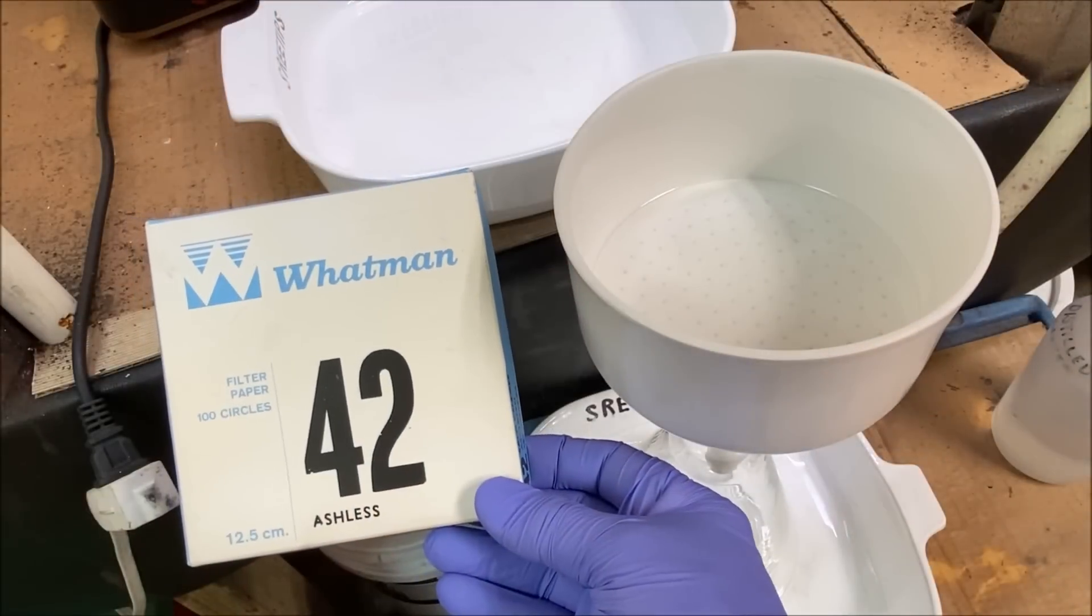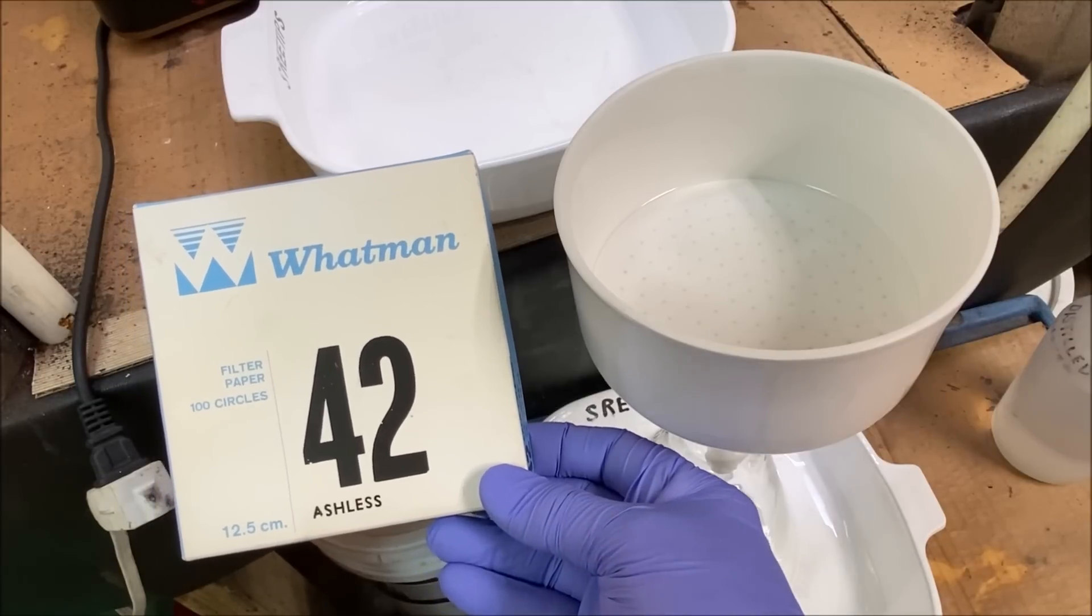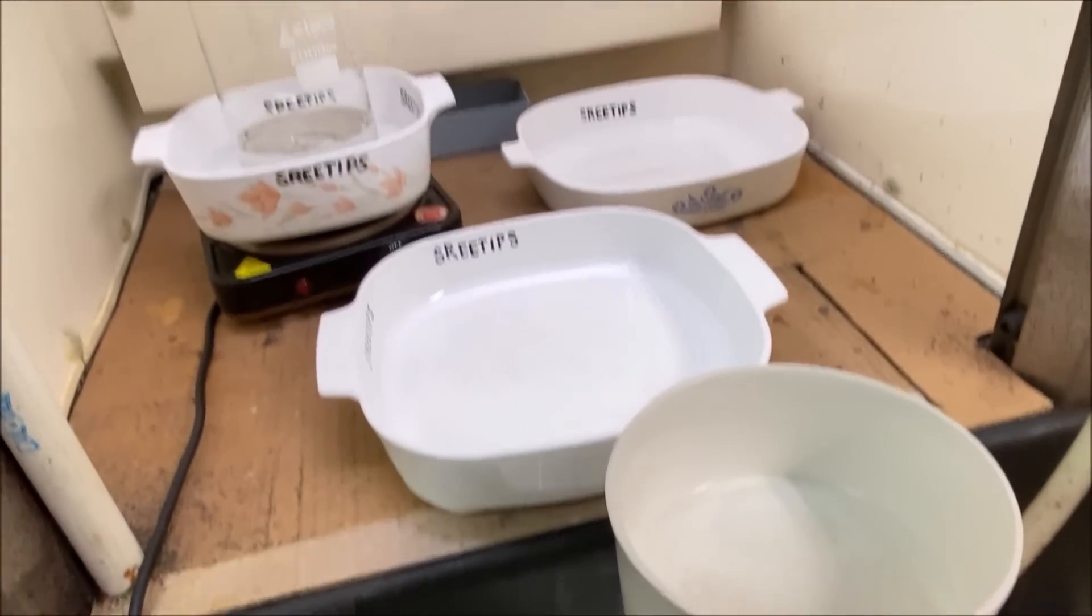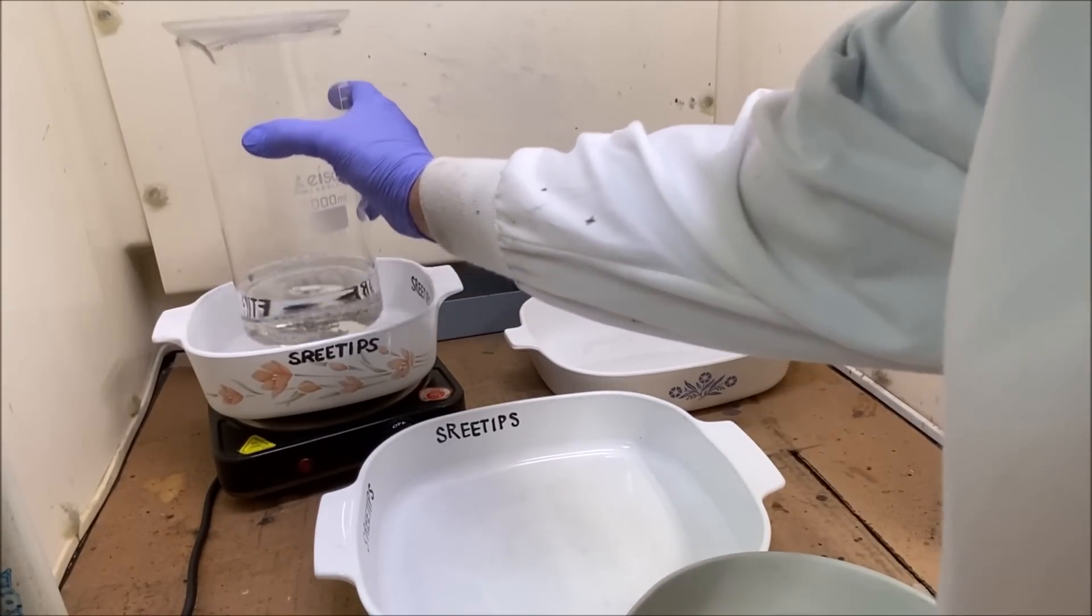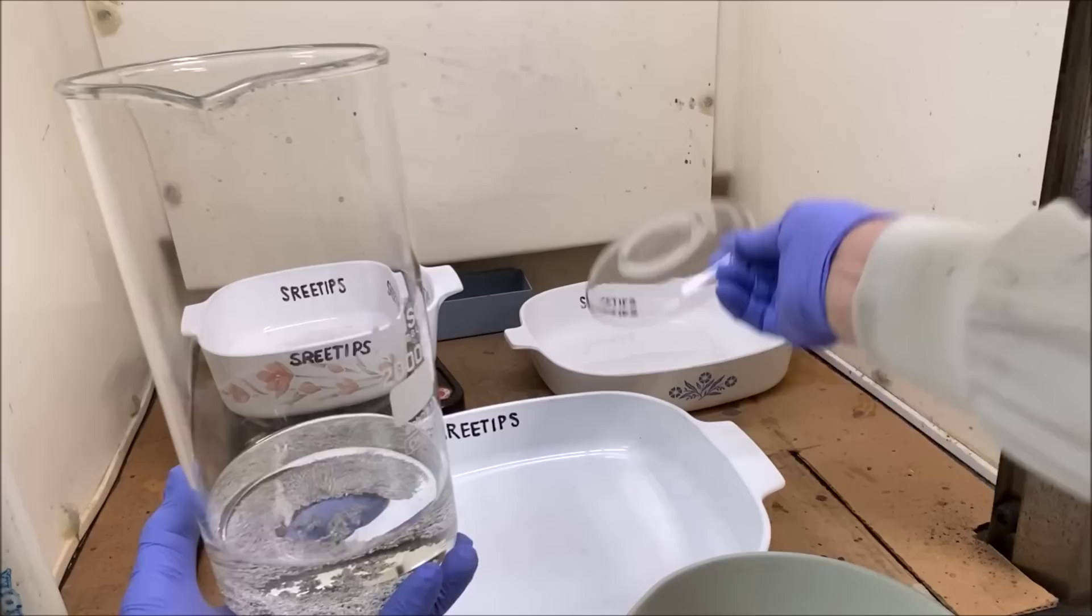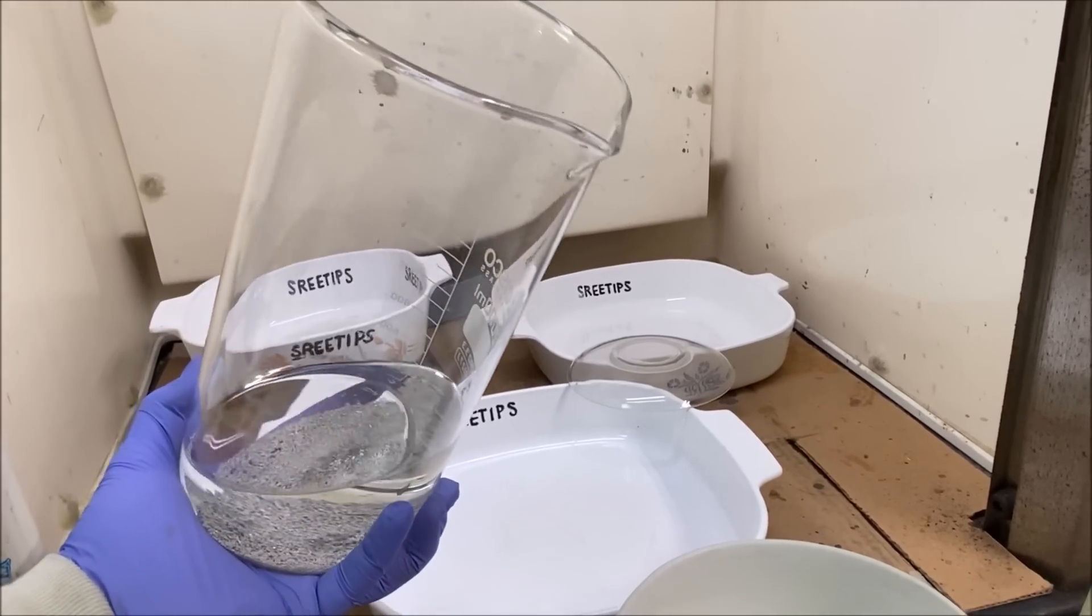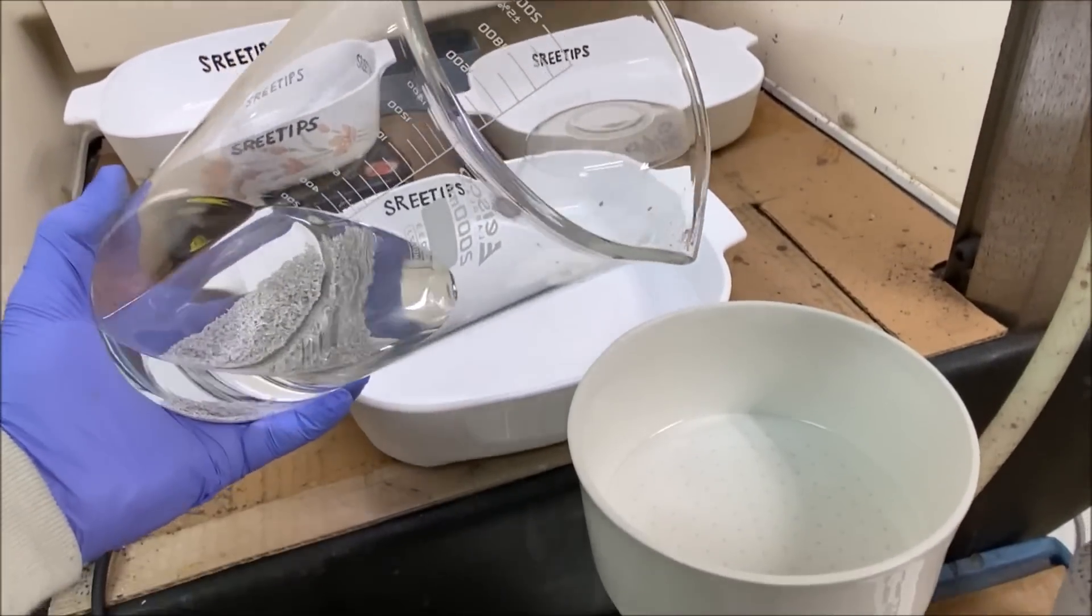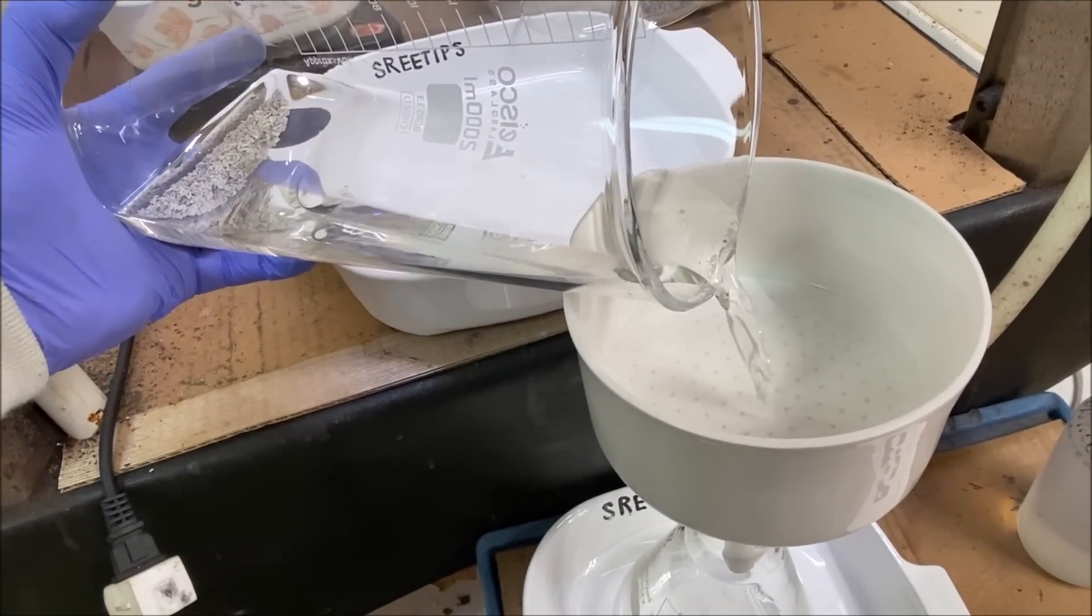I've got a funnel set up here with a filter paper in it. So what we'll do is reach back in here, grab our silver nitrate solution. This is about 100 grams of pure silver dissolved in about 400 milliliters of solution. I'm just going to filter this.